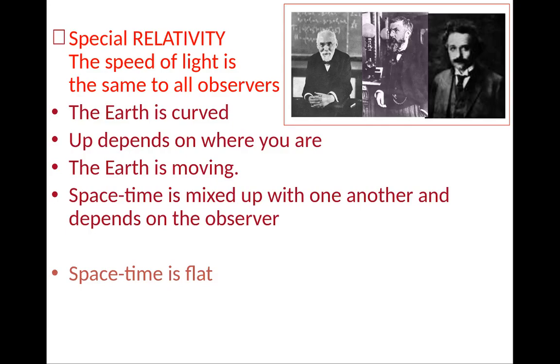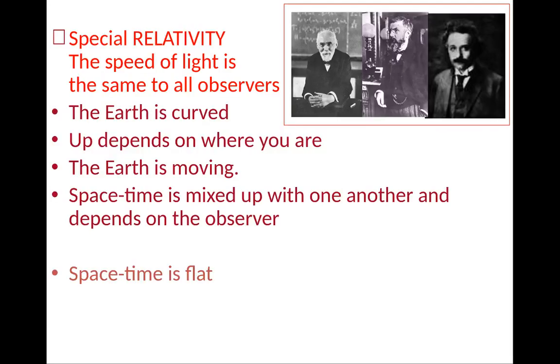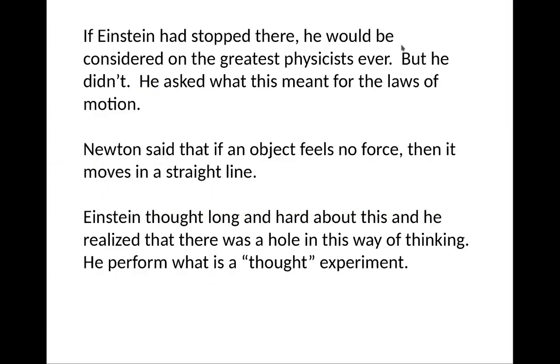So this is called the special theory of relativity. And the tenet of this special theory of relativity is the speed of light is the same to all observers. Earth is still curved, up depends on where you are. Earth is moving. Spacetime is mixed up with one other and depends on the observer, but spacetime is still flat. Now, if Einstein had stopped there, he would be considered one of the greatest physicists ever. But he didn't. He asked what this meant for laws of motion.